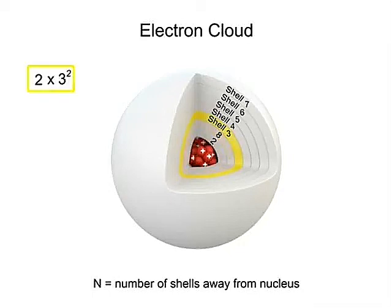For the third, 2 times 3 squared, or 2 times 9 equals 18 electrons.